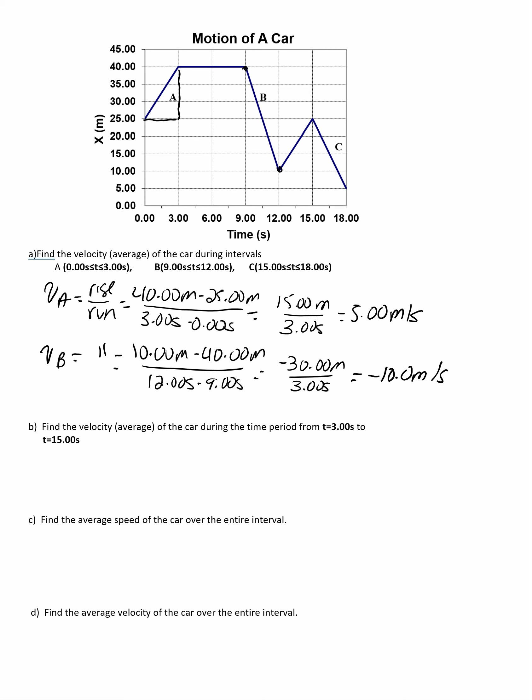Which makes sense, because we have a line that has a negative slope. We can now do the same for C, and when we find the slope between these two points, by rise over the run, we should see that the velocity at C is negative 6.67 meters per second.